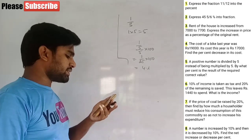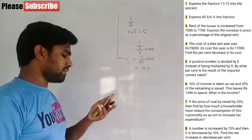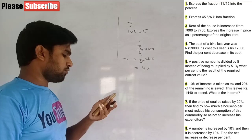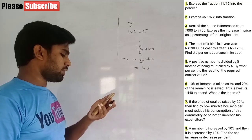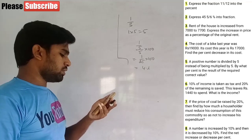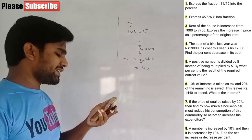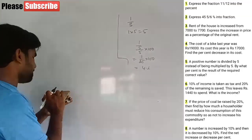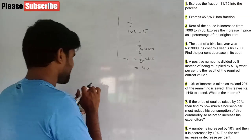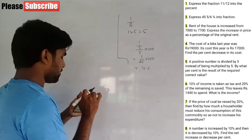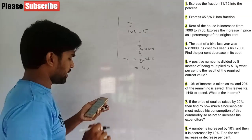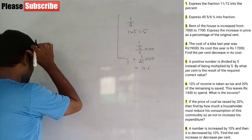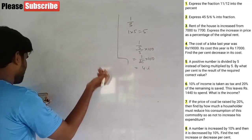Question 6: ten percent of income is taken as tax and twenty percent of the remaining is saved. This leaves 1440 rupees to spend. What is the income? After 10 percent tax is cut, twenty percent of the remainder is saved.